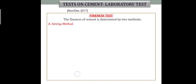The fineness test has two methods: one is the sieving method and another is the air permeability method. Most labs use the sieving method. The sieve is used to determine how fine the cement is — because cement should always be fine and should not feel coarse. The cement should always be less than 90 microns.